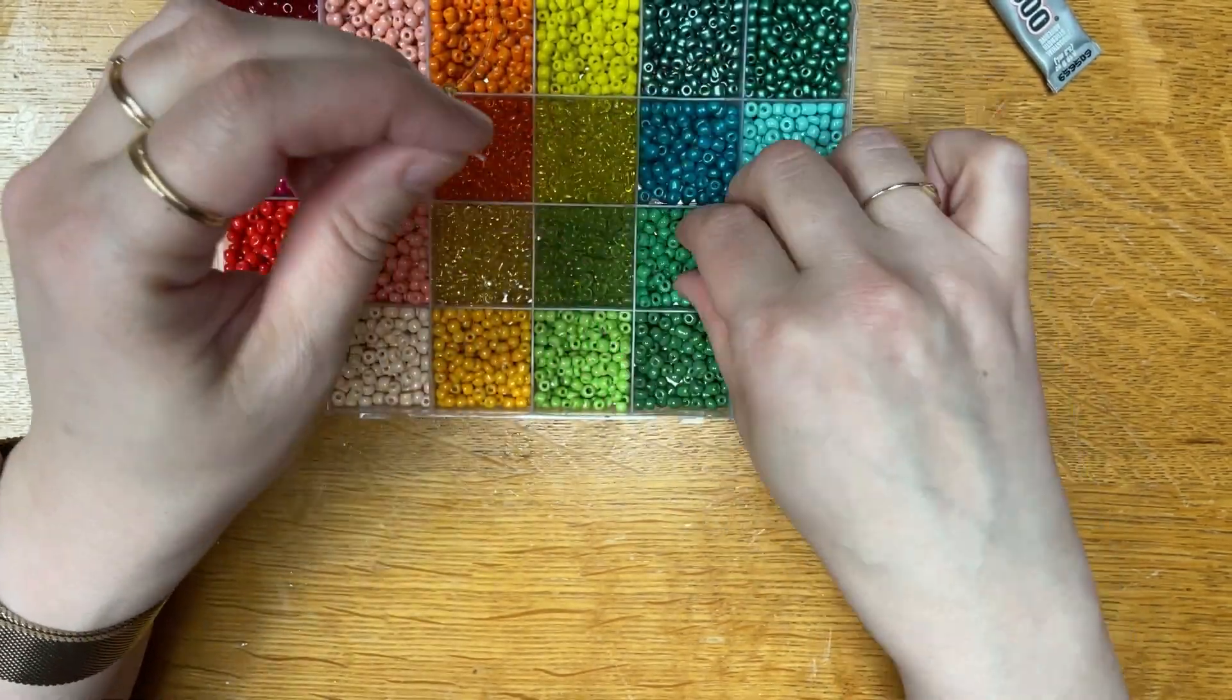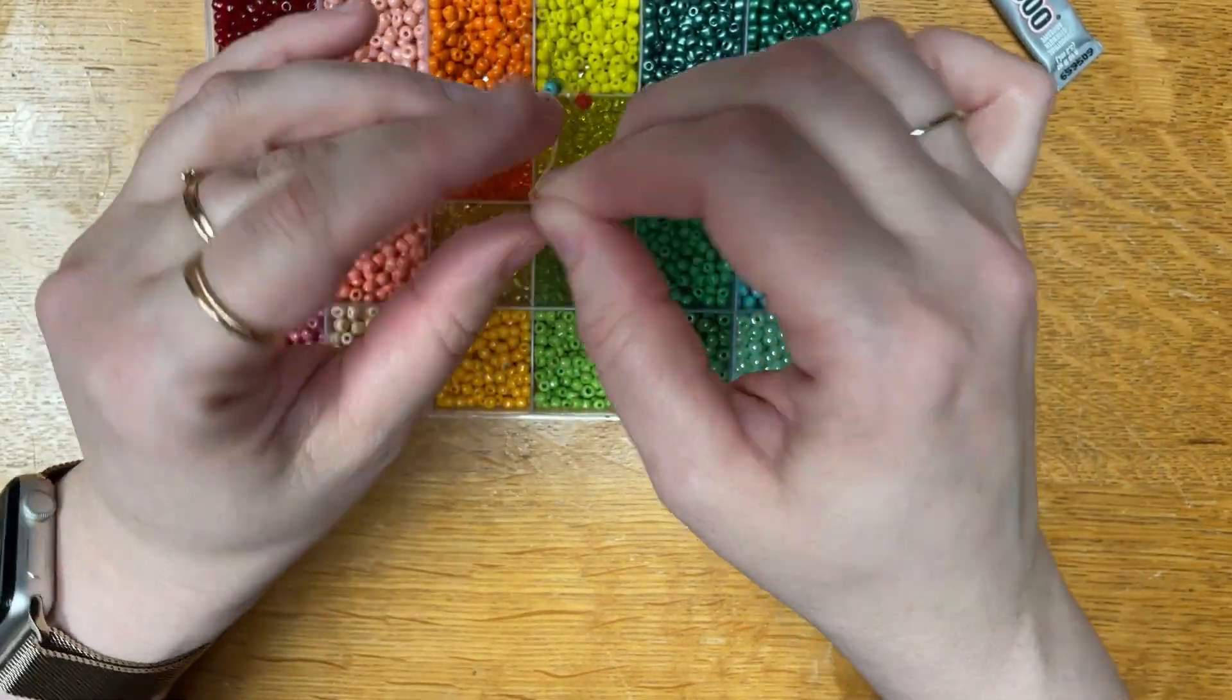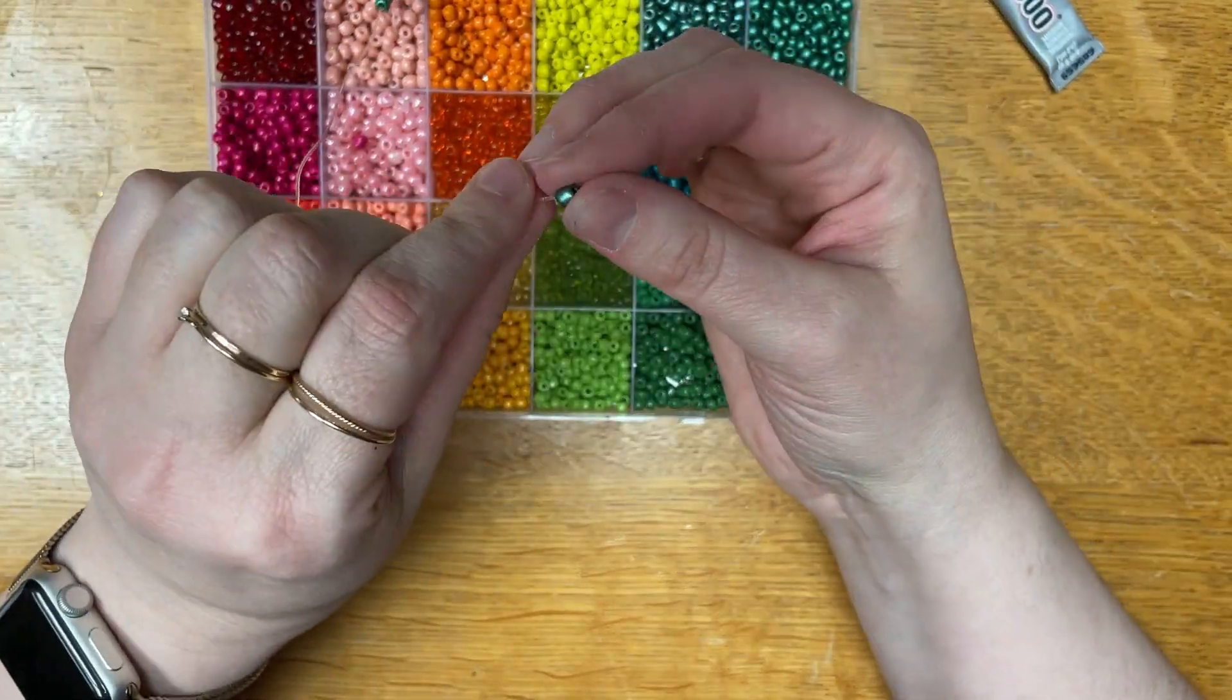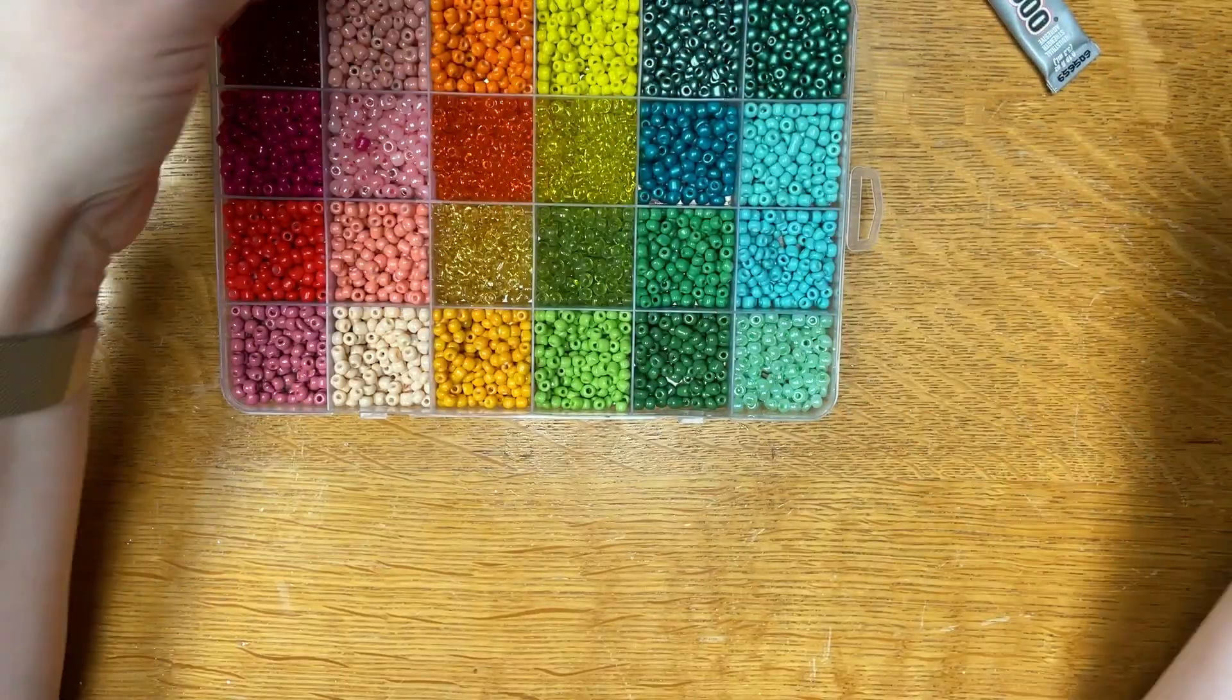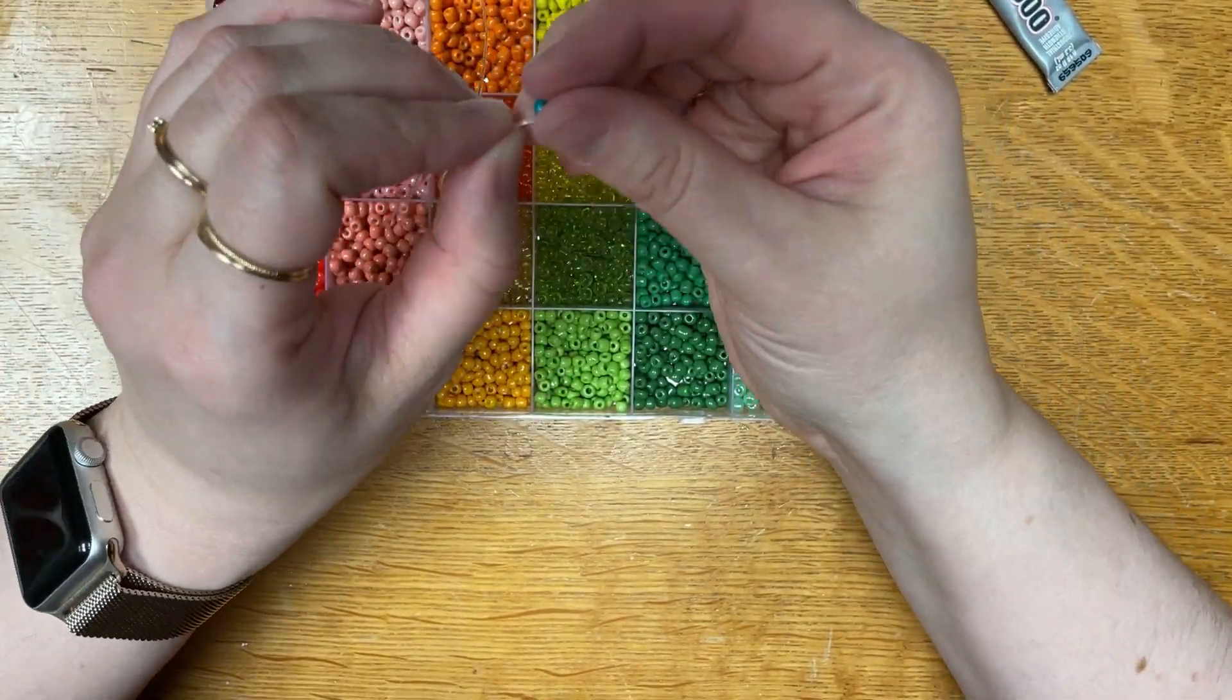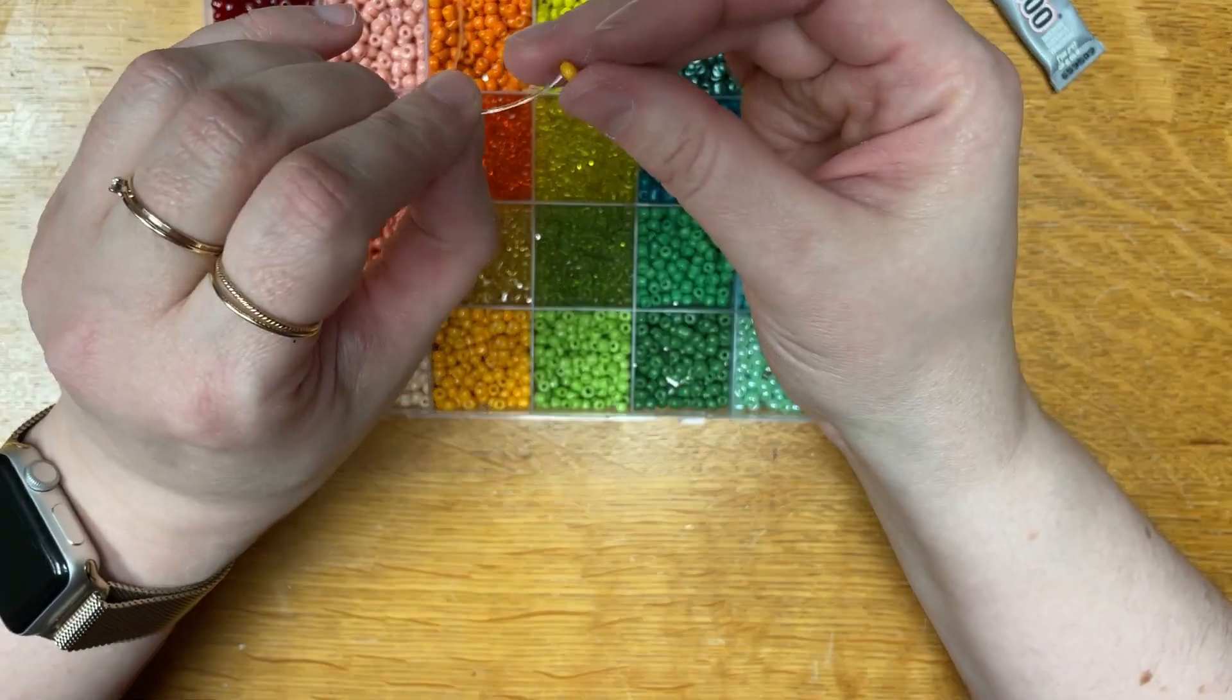If you're going to use something that's not stretchy, you'll want to use a clasp. If you use a clasp, you just start with that on one end and bead until you get to the length you want, and then add the other part of the clasp on that end.